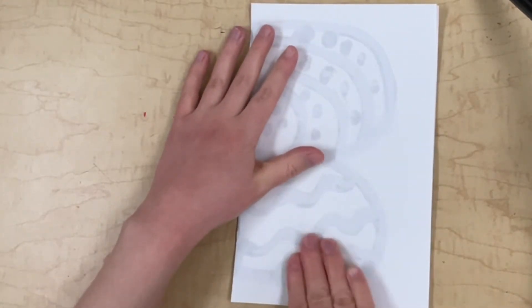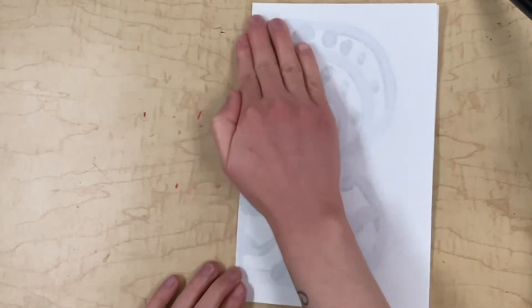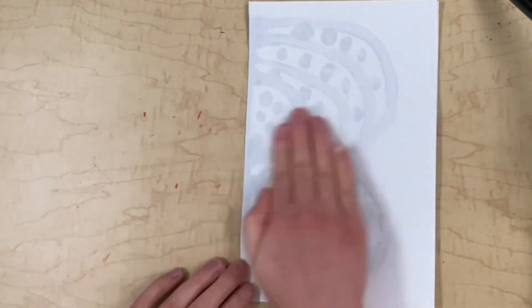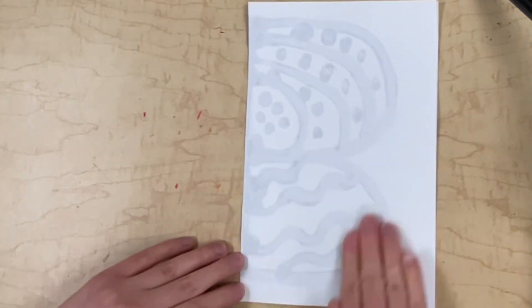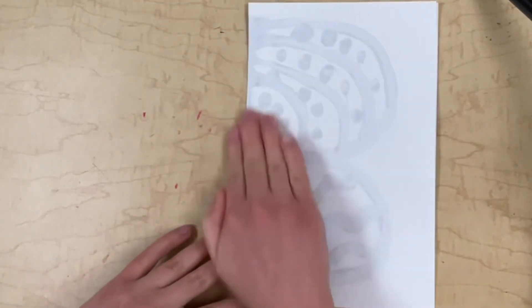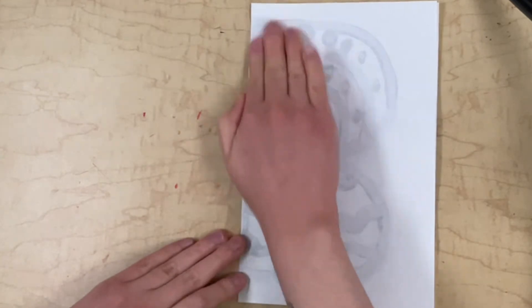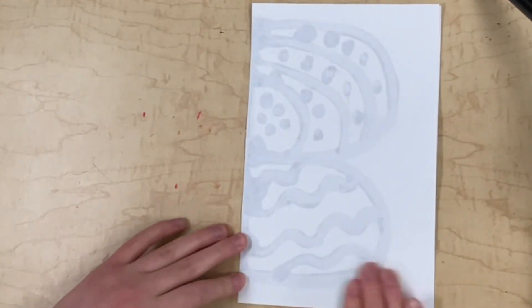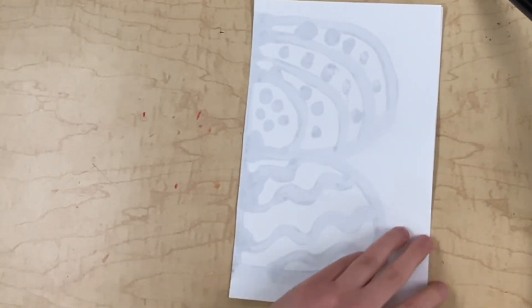Rub the paper on the outside very gently, like you're giving it a nice little massage, and make sure you get every part of your painting so that it makes a good print on the other side. It's not going to be perfect, but we want it to look pretty good.